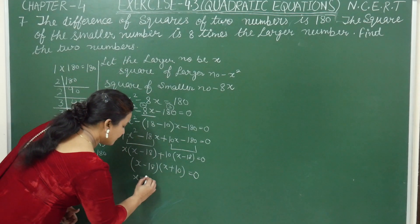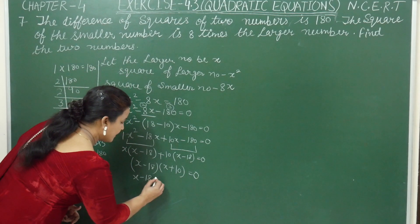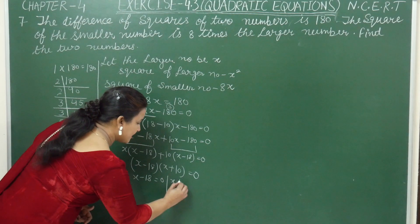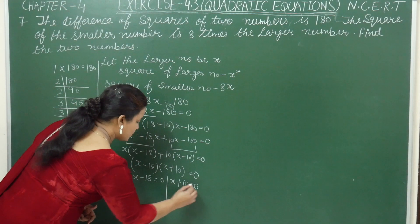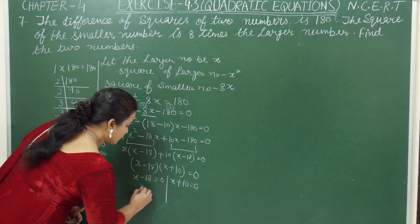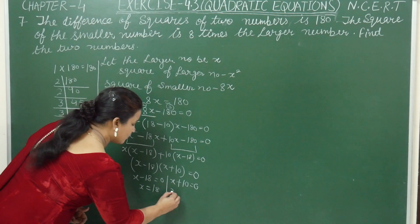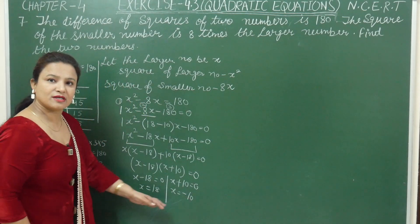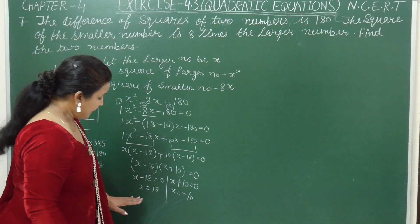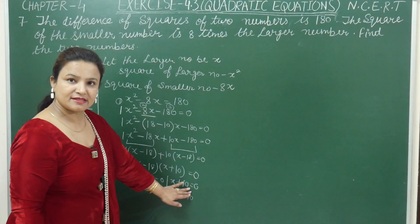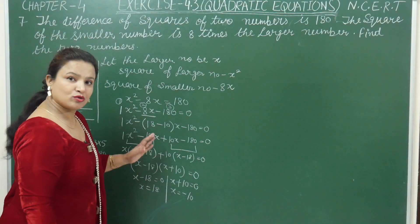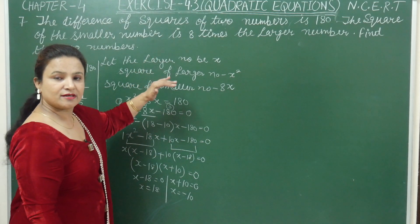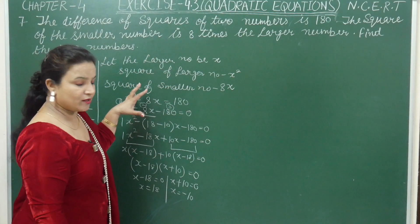Taking each factor separately: x − 18 = 0 gives x = 18, and x + 10 = 0 gives x = −10. So we have two values: x = 18 and x = −10. Accordingly, we need to find the larger and smaller numbers for each case.